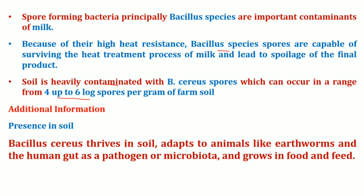In presence in soil, Bacillus cereus thrives in the soil, adapts to animals like earthworms and the human gut as a pathogen or microbiota, and grows in food.